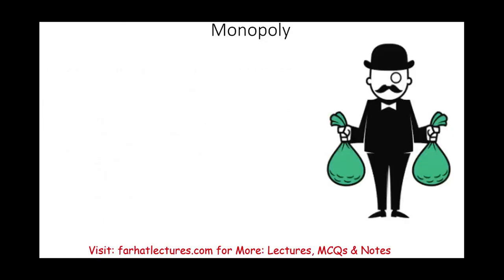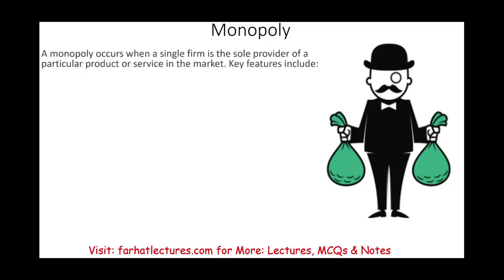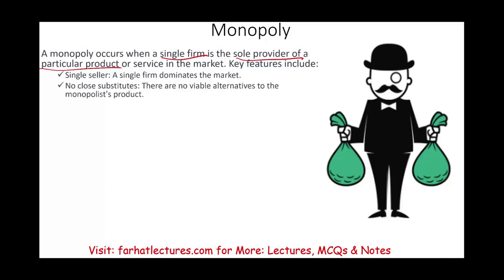Another market structure is called a monopoly. A monopoly is the other extreme of perfect competition. Here, one single firm is the sole provider of a particular product or service in the market. Monopolies, generally speaking, are illegal — for example, the US government does not allow companies to have a monopoly. Microsoft at some point had a monopoly and the Department of Justice made sure they didn't. You have a single seller that dominates the whole market, there is no close substitute, no viable alternative — you either buy their product or you have no other option. For example, utility companies in some areas have one company that covers a wide geographical area, so if you want electricity or gas, you only have one supplier — that's a monopoly.